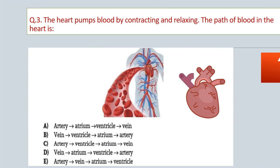Question No. 3. The heart pumps blood by contracting and relaxing. The path of blood in the heart is: A. Artery → atrium → ventricle → vein. B. Vein → ventricle → artery → atrium. C. Artery → ventricle → atrium → vein. D. Vein → atrium → ventricle → artery. E. Artery → vein → atrium → ventricle.